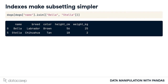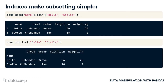You may be wondering why you should bother with indexes. The answer is that it makes subsetting code cleaner. Consider this example of subsetting for the rows where the dog is called Bella or Stella — it's a fairly tricky line of code for such a simple task. Data frames have a subsetting method called .loc which filters on index values. Here you simply pass the dog names to .loc as a list. Much easier.